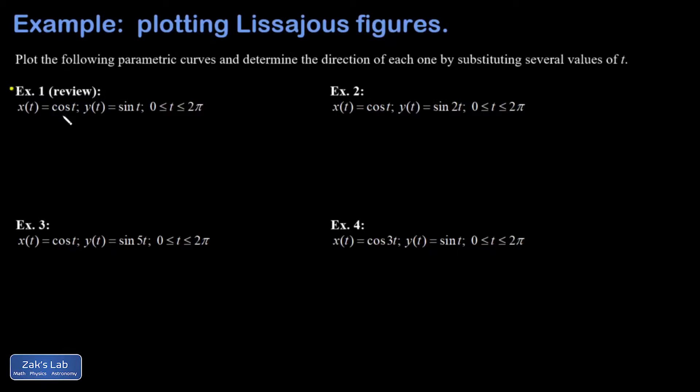I have x(t) equals cosine t, y(t) equals sine t. Those are the parametric equations for the unit circle. So there's our old friend, the unit circle. The reason I brought this in is because we can understand Lissajous figures by thinking of them as modifications of the unit circle.